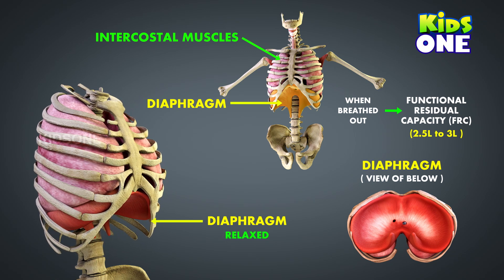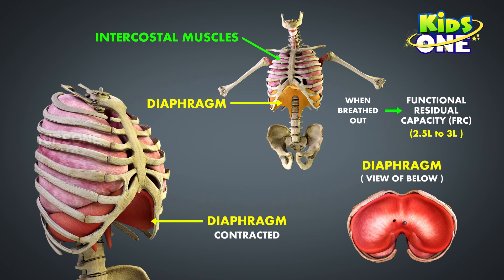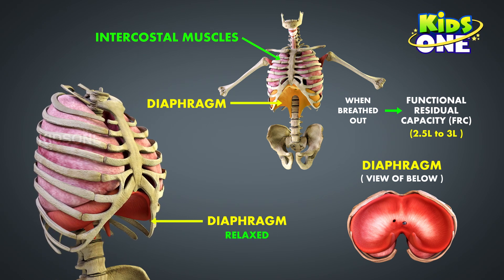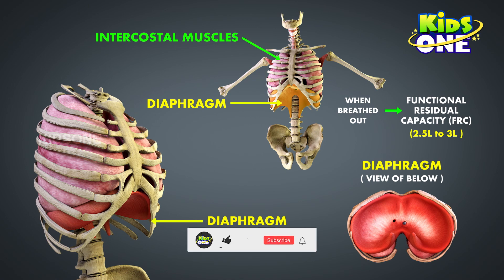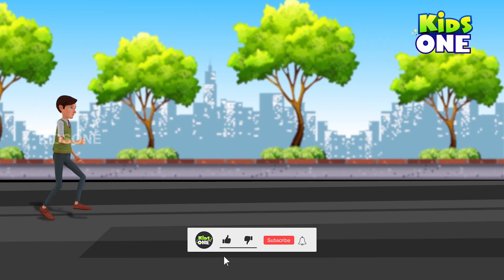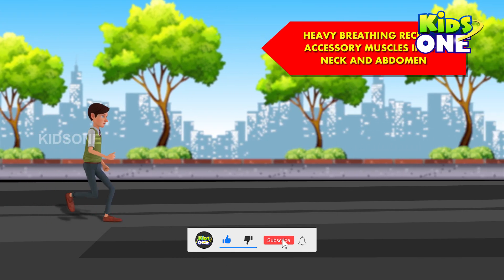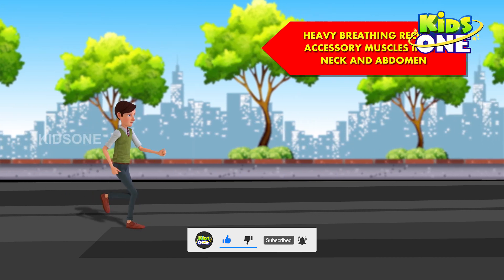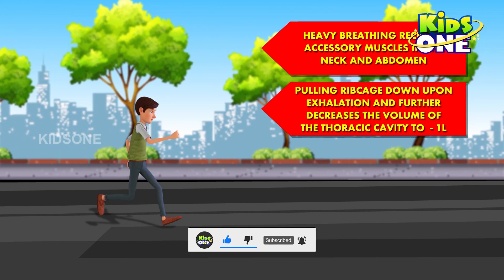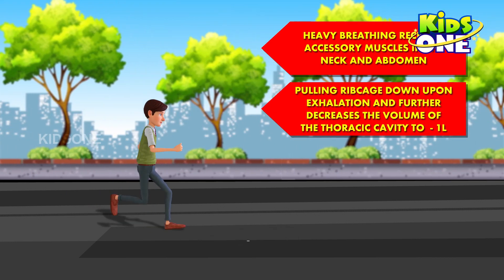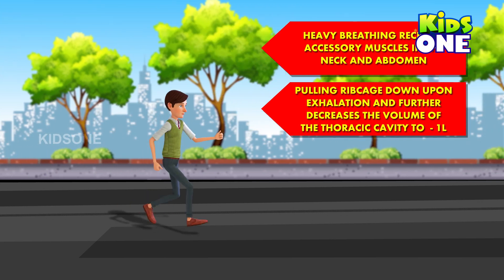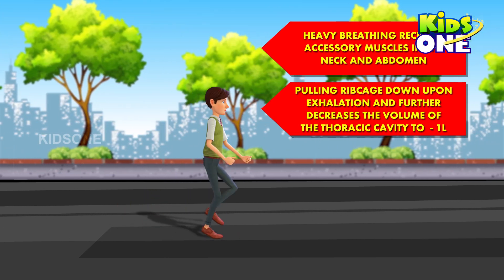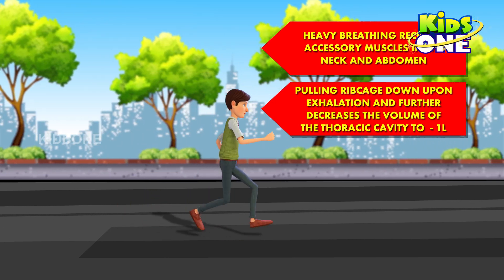When you have breathed out, the volume of air remaining in your lungs is called the functional residual capacity, or FRC, which is around 2.5 to 3 liters in an adult. When you exercise, heavy breathing recruits accessory muscles in the neck and the abdomen, pulling the ribcage down upon exhalation and further decreasing the volume of the thoracic cavity to around 1 liter.